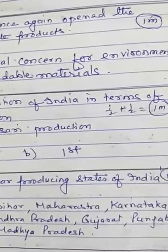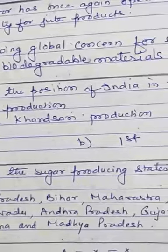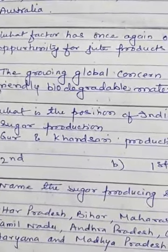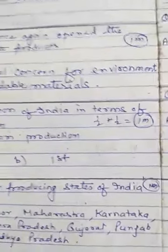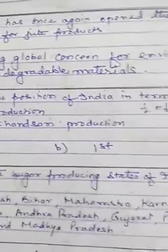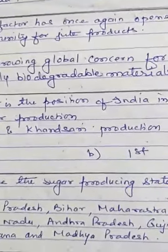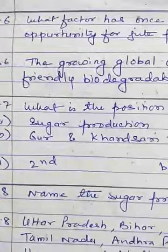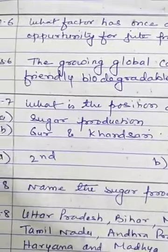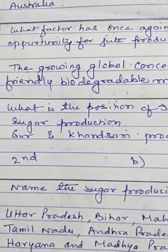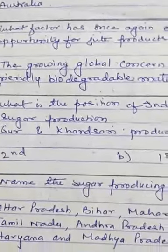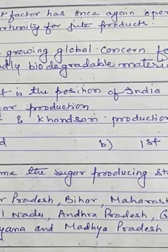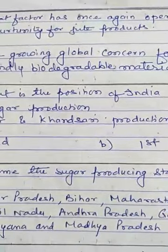Question 8: name the sugar producing states of India. Uttar Pradesh, Bihar, Maharashtra, Karnataka, Tamil Nadu, Andhra Pradesh, Gujarat, Punjab, Haryana, and Madhya Pradesh are the leading producers of sugar in India. Encircle Uttar Pradesh in map work as well — it is the leading producer state. The yield per hectare of sugar is more in South India compared to the northern part of India.